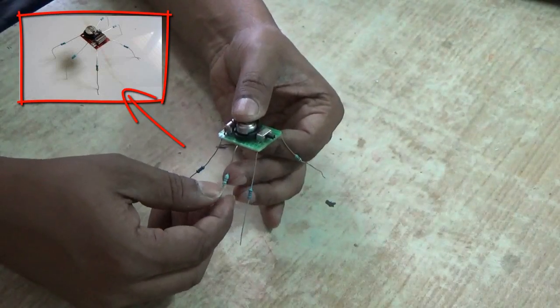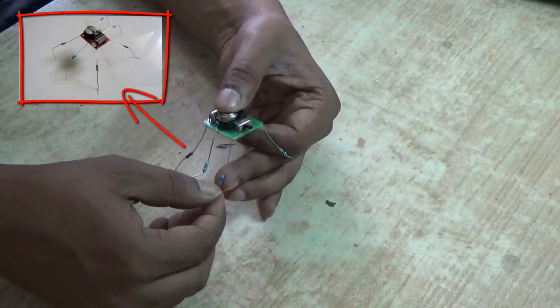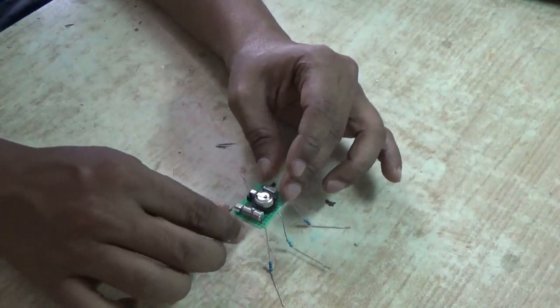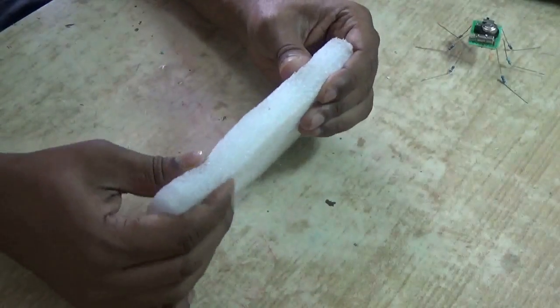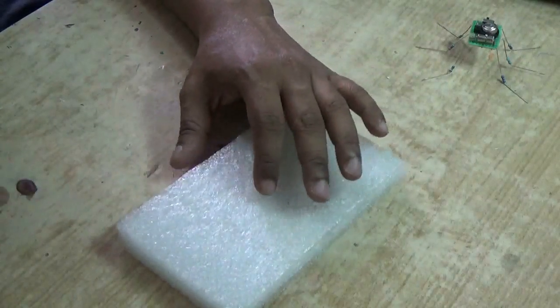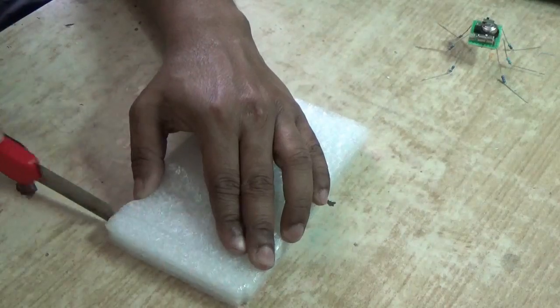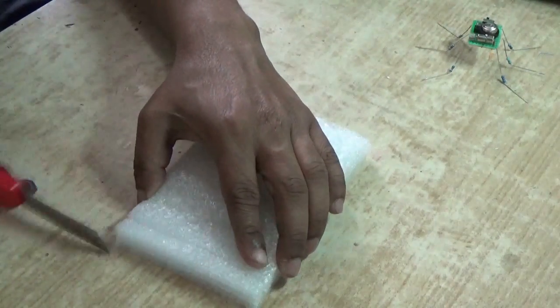For this, first you have to make the same old robot, so go and check the link below. Bend the legs horizontally, and then you need some packing materials like this which is waterproof as well as very lightweight. It floats on top of water.